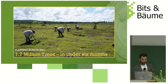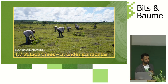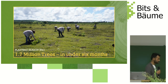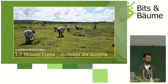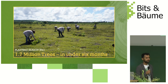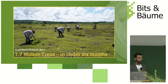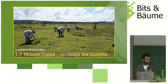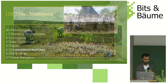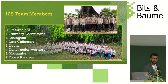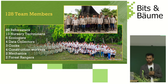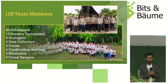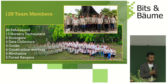In 2021, we planted about 1.7 million trees in just under six months — this was during the COVID pandemic. In previous years we did a little more than 2 million trees. We have about 89 reforesters and altogether 128 team members working in Mexico on the Yucatan restoration project.